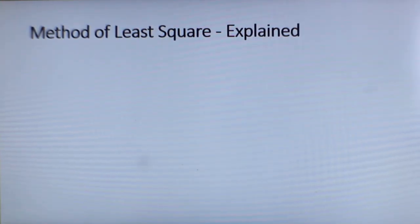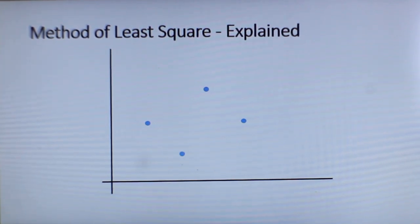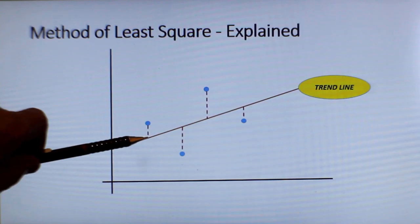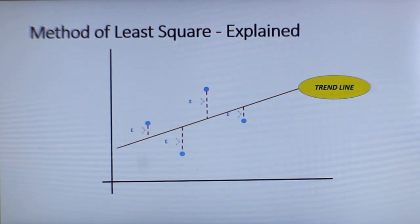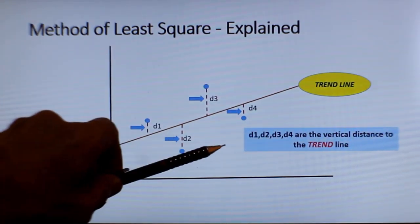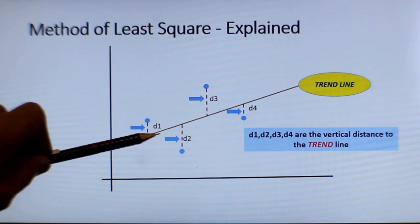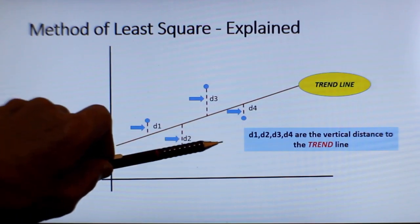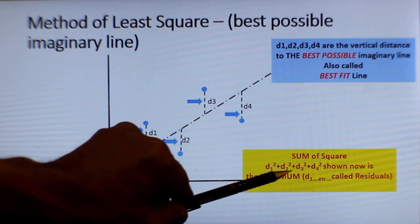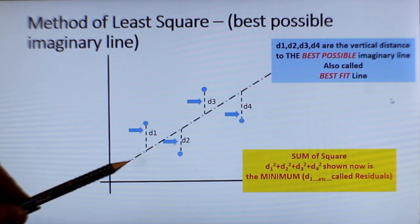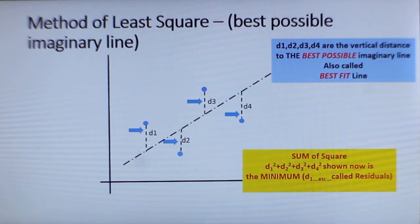Let us now understand the method of least square. This is typically the data points. This is X axis and this is Y axis. And probably if you draw a trend line, it looks like this. These are all the vertical distance from the trend line to the actual data points. The objective of method of least square is to find an imaginary line that will give you a result in such a way that d1 square plus d2 square plus d3 square and d4 square is minimum. By this I mean that sum of the squares of d1, d2, d3 and d4 will be minimum. And no other line can be as best or as better as this. And that is what is the principle of method of least square.